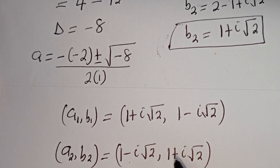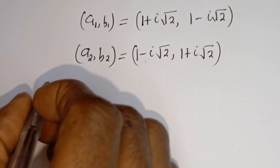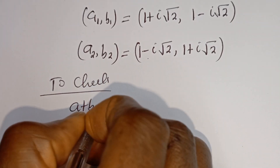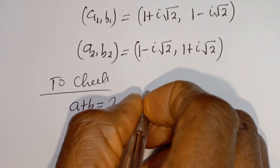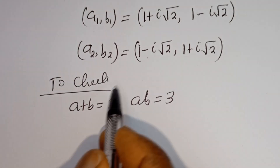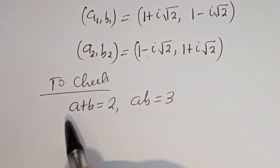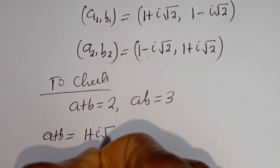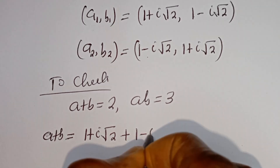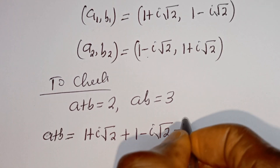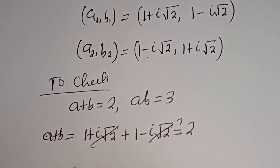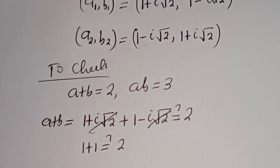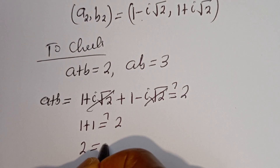We can check to confirm if this answer is right. To check, we have the given equations A plus B is equal to 2 and AB is equal to 3. Let's check using A1, B1. Then A plus B is equal to (1 plus i root 2) plus (1 minus i root 2). The i root 2 terms cancel, leaving 1 plus 1 which must equal 2, and indeed 2 is equal to 2 — which is true.